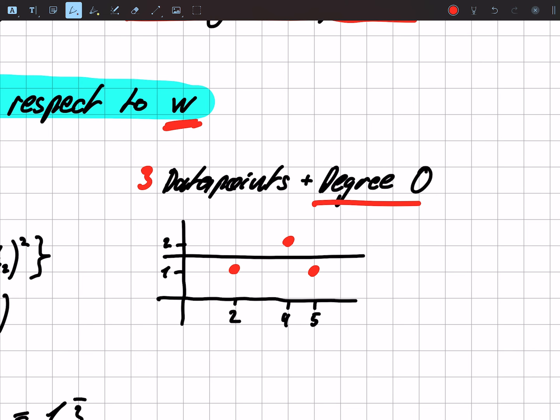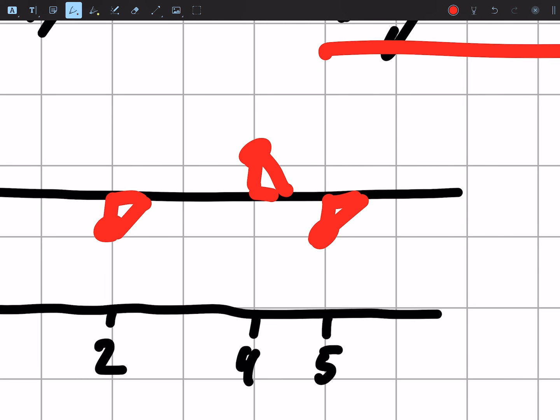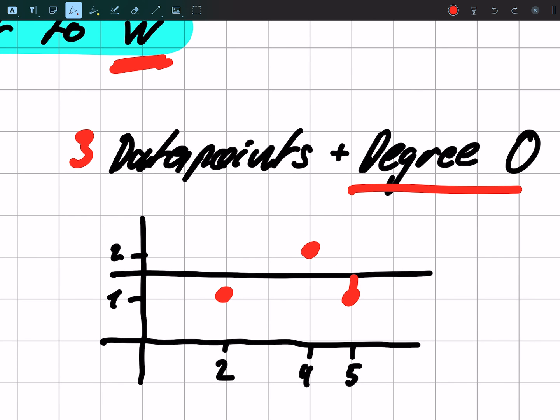And for this we chose a degree zero, so basically a straight line. And we want to find out where do we place the line that our error, this area basically, is as small as possible.